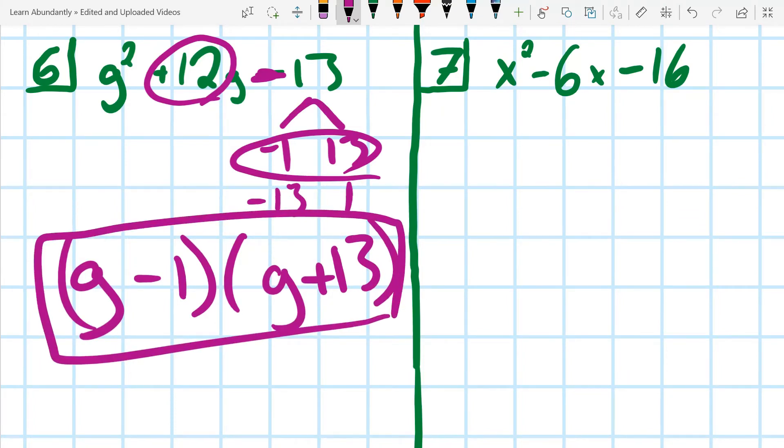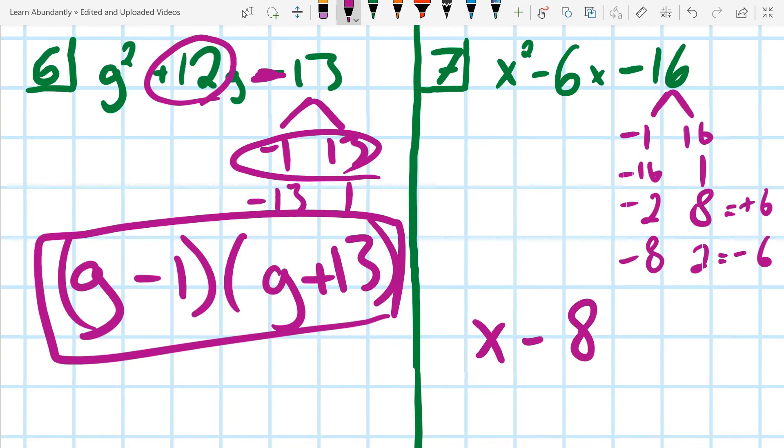Number 7. Number 7, they're both negative. So again, I need two numbers that multiply to give me negative 16. Negative 1 and 16, but those don't give me 6. Negative 16 and 1 still doesn't give me 6. Negative 2 and 8. That looks closer, except that gives me positive 6. So negative 8 and 2 gives me negative 6, and that's the number I'm going to go with. So I'm going to go with x minus 8, and x plus 2, because the 2 isn't negative.